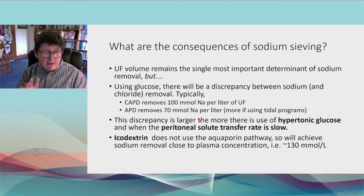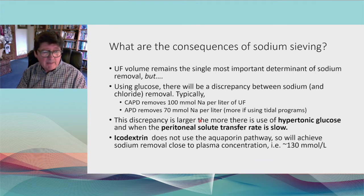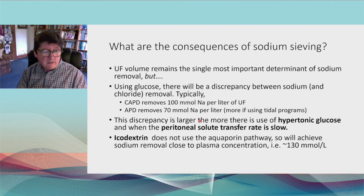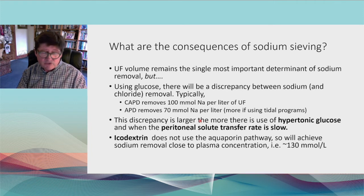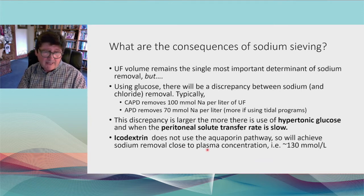The discrepancy between salt and water removal is greatest with hypotonic glucose and in patients with a relatively low peritoneal solute transfer rate. These patients maintain the osmotic gradient longest and get the best ultrafiltration, but over 50% of it comes through the aquaporin pathway. Therefore, to optimize sodium removal — particularly in APD — the long exchange must use icodextrin, which is not dependent on the aquaporin pathway, giving sodium removal closer to plasma concentration — typically around 130 millimoles per litre of ultrafiltrate.